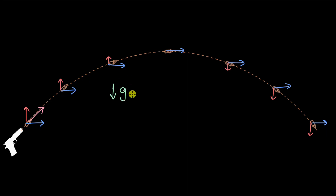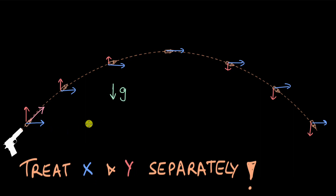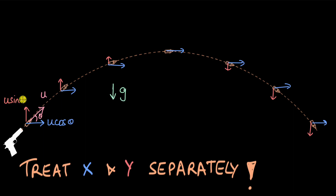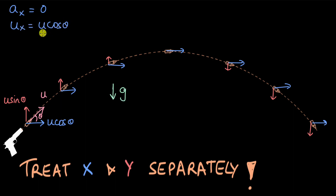One way to analyze projectile motion in full detail is to treat x and y separately — the horizontal motion and the vertical motion. If the bullet was fired with velocity u at an angle theta, we can resolve this into components. The horizontal component is u cos theta, and the component opposite to theta is the sine component. In the x direction, there is no acceleration, so ax is zero, and the velocity ux equals u cos theta throughout.